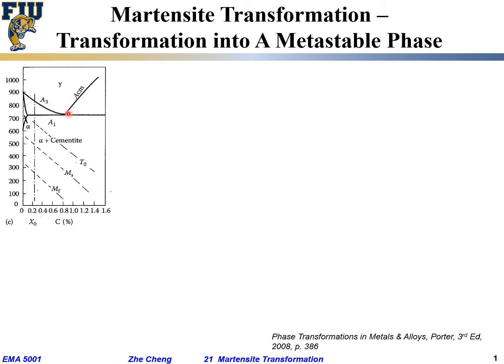At a higher temperature, the solubility of carbon can be a little bit even higher. On the very left side, there is a mark for alpha — we have a little bit of pure alpha phase. Below the so-called eutectoid temperature, the reaction is gamma transforming to alpha plus cementite. The eutectoid temperature is roughly 720 something degrees Celsius.